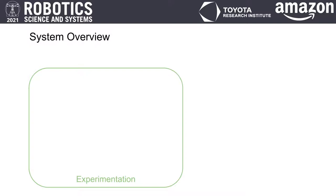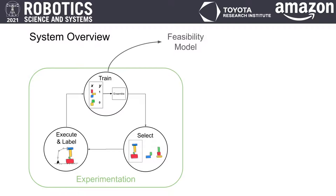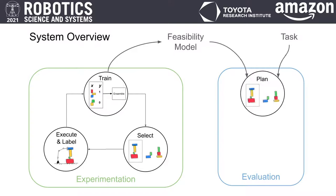First, the robot performs self-guided experimentation without a specific task or goal in mind. This consists of selecting which towers to build, labeling those towers, and using the labeled data to train the feasibility model. We then evaluate our method on several downstream tasks. We first plan to achieve a task objective, and then execute that plan in the real world.